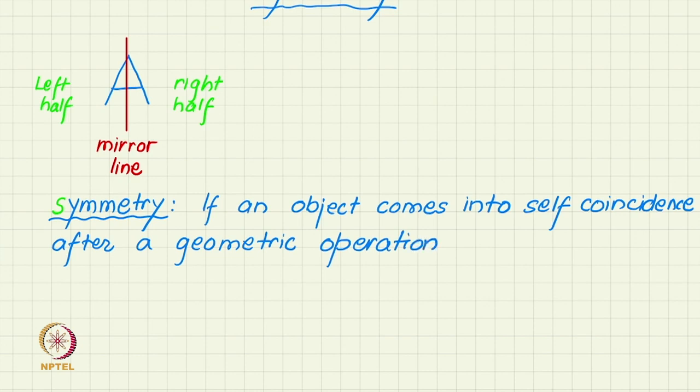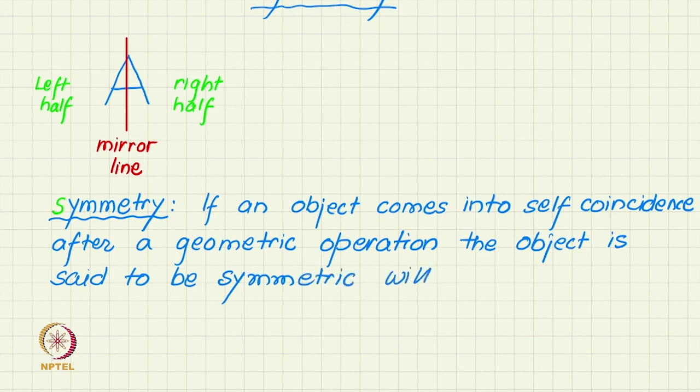In the case of letter A, the geometric operation was reflection in a line. If an object comes into self-coincidence after a geometric operation, the object is said to be symmetric with respect to that operation.